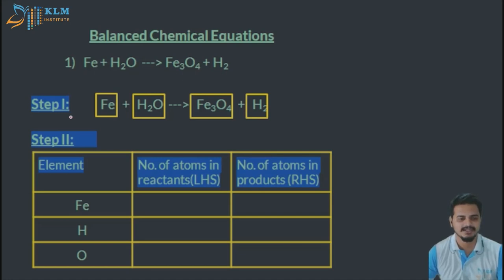Step one: you can just box each of the elements here as shown. Next step, you can count the number of atoms of reactant and product. So Fe in the left-hand side, that is in the reactant side, it is only one, so write down one here.